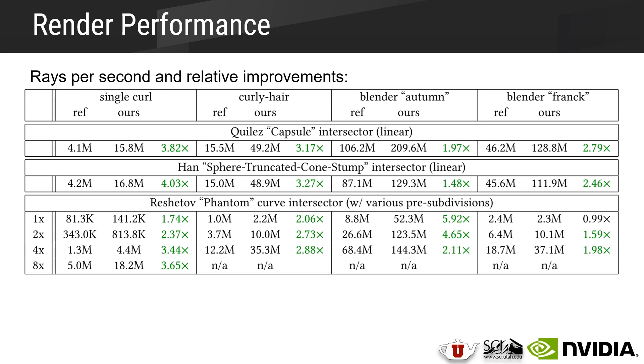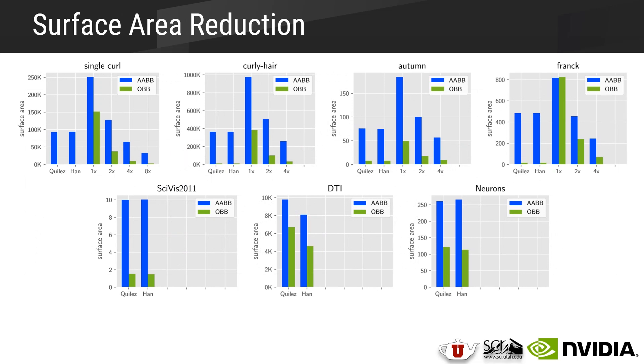Then interestingly, our speedups also correlate primarily with surface area reduction. And this correlation is interesting because it means that we might be able to rely on this surface area comparison while building an acceleration structure before rendering. For example, with the phantom intersector, our surface area reduction gets better and better as we subdivide the curves more and more since those OBBs can more tightly fit the more cylindrical-like data. And then we are also able to see a lack of performance improvement for Frank in the phantom intersector no-subdivision case.